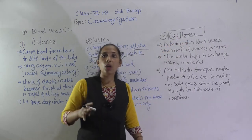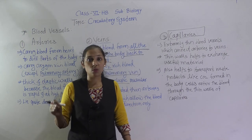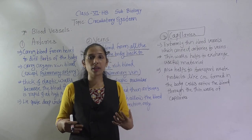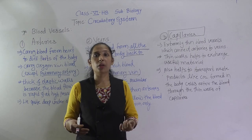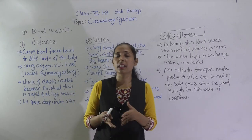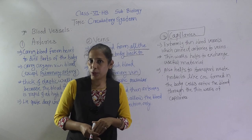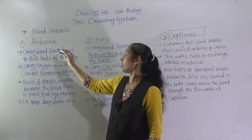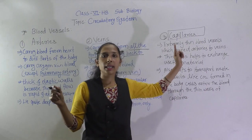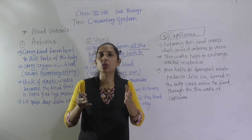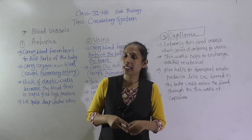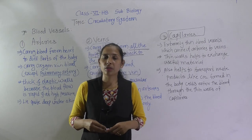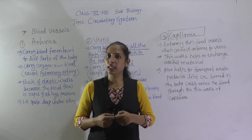So this is all about the different blood vessels — with the help of these blood vessels, blood circulates in our body and different types of material are transported. The three blood vessels are arteries, veins, and capillaries. This is all for today; we will meet in the next video with the next point. Thank you.